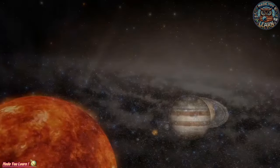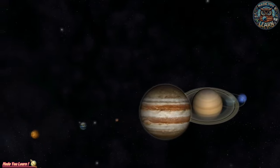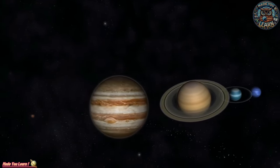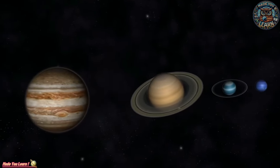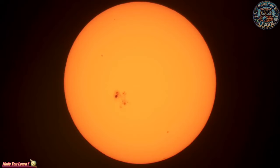The Oort Cloud, a theoretical vast sphere of icy objects, marks the boundary of our Sun's gravitational influence and the edge of our solar system. It's from this distant reservoir that comets embark on their long journey towards the Sun.